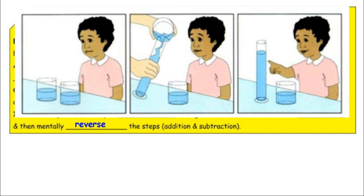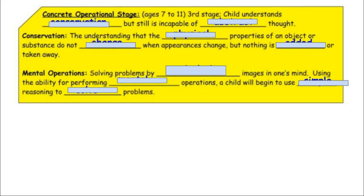Reversibility connects to conservation. If you take two beakers of equal fluid and pour the contents into a taller beaker, a child may not realize it's the same amount of fluid. Concrete operational is the third stage, from about age seven to 11. A child will understand conservation but is still incapable of abstract thought. Conservation is the understanding that physical properties of an object or substance don't change when the appearance changes — nothing is added or taken away. By the time we reach concrete operational, children start grasping these ideas.